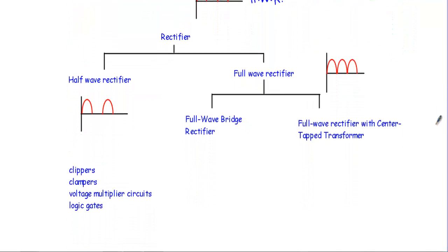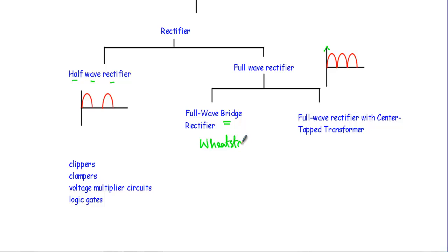Rectifier circuits are primarily classified into two types: half wave rectifier and full wave rectifier. A half wave rectifier gives output voltage for only one half cycle of the applied voltage. A full wave rectifier gives output voltage for both half cycles. Full wave rectifiers are further classified into two types: the full wave bridge rectifier, and the full wave rectifier with center-tap transformer. The bridge rectifier is so named because its circuit construction resembles a Wheatstone bridge circuit.